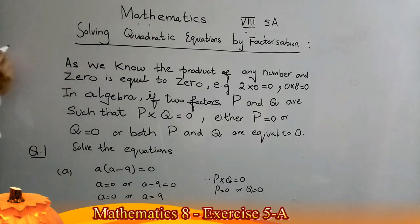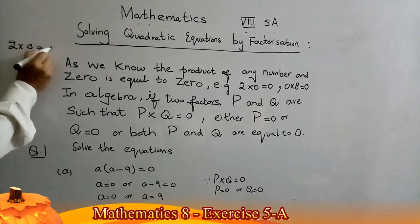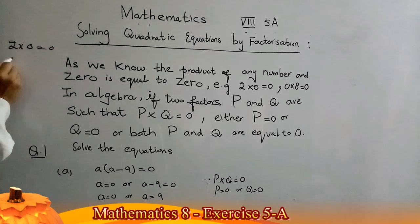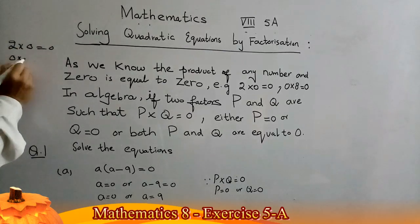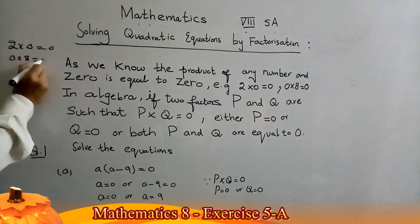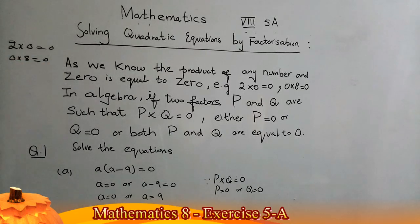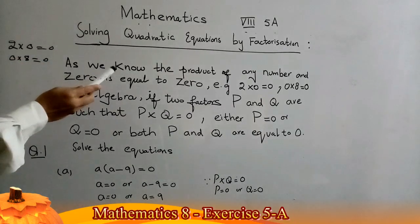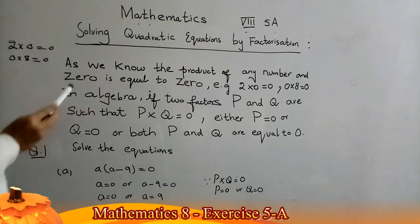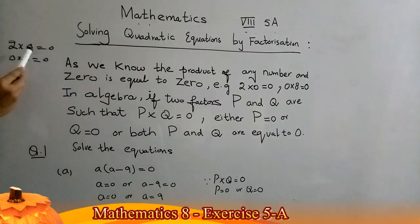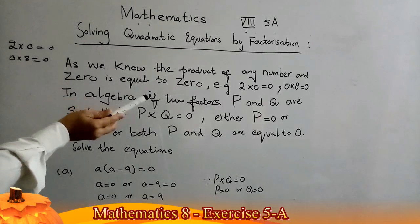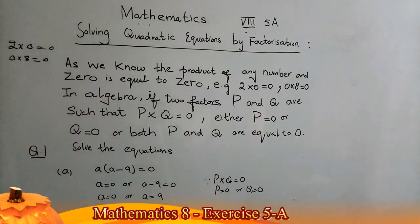As we know, the product of any number with zero is equal to zero, and the product of zero with any number is also equal to zero. For example, 2 × 0 = 0, and 0 × 8 = 0.